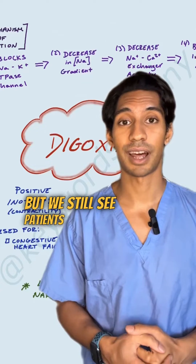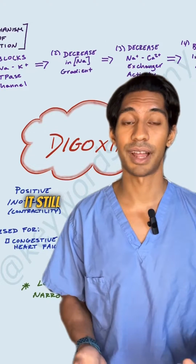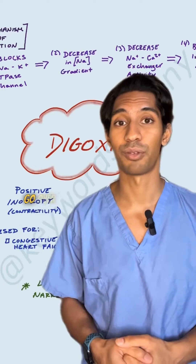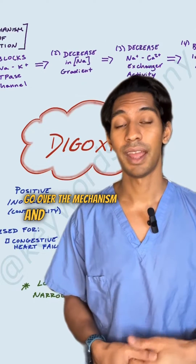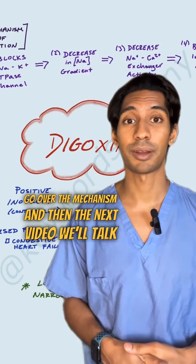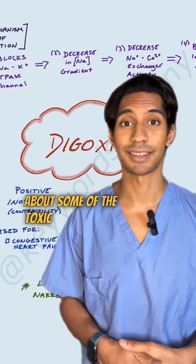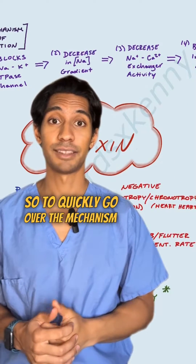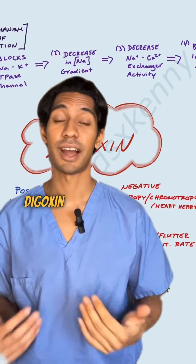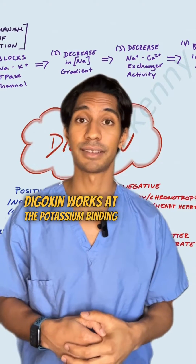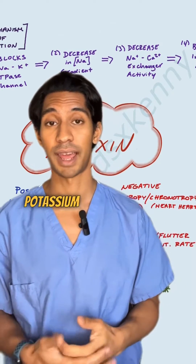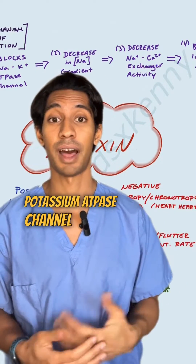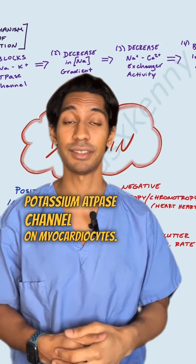We still see patients on it right now — it still has value, so I think it's valuable to go over the mechanism. In the next video, we'll talk about some of the toxic side effects. So to quickly go over the mechanism of action, digoxin works at the potassium binding site on the sodium-potassium ATPase channel on myocardial cells.